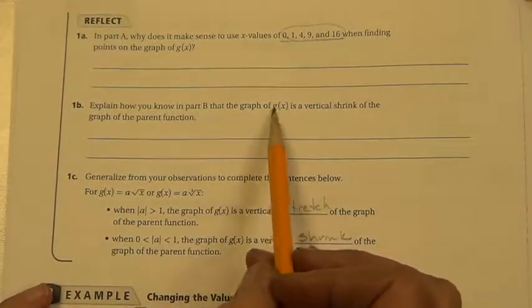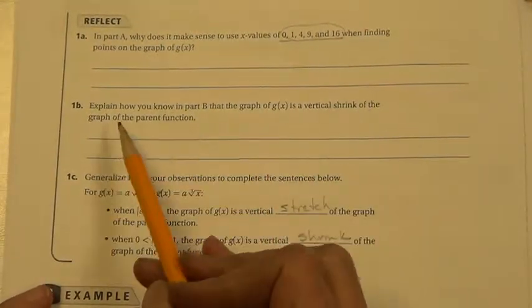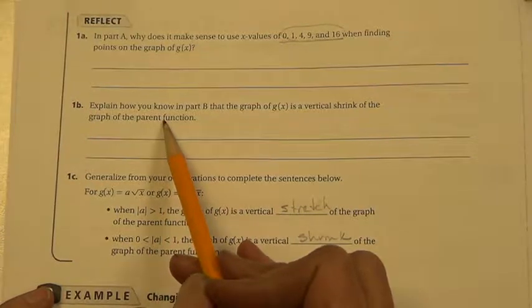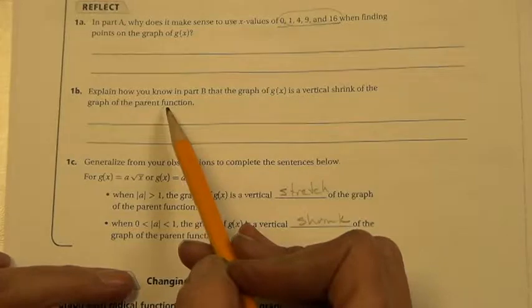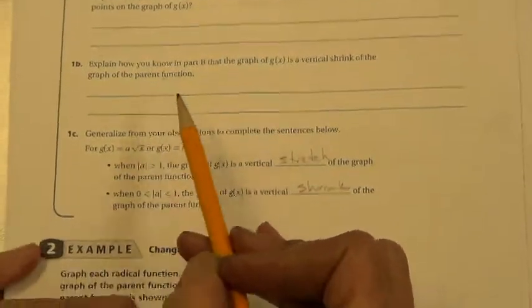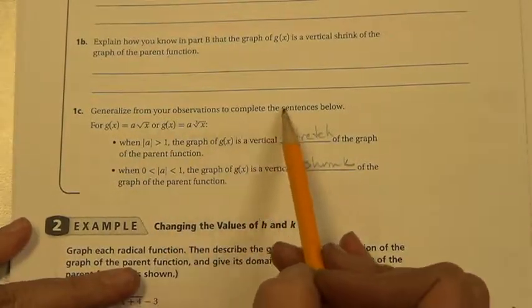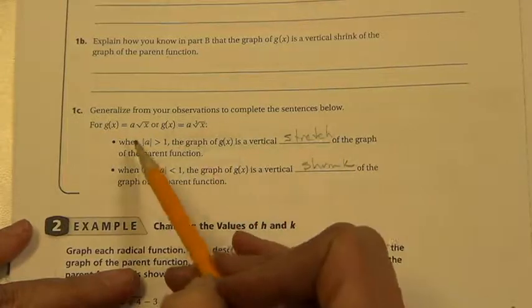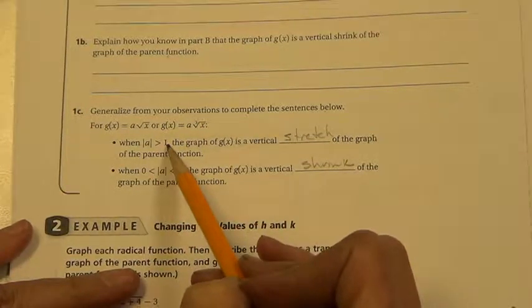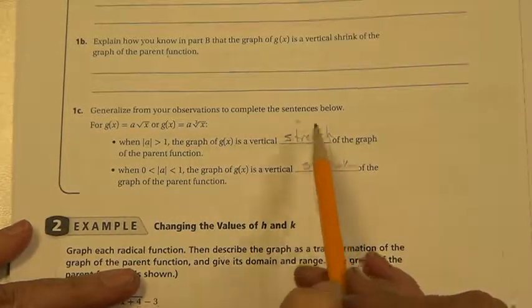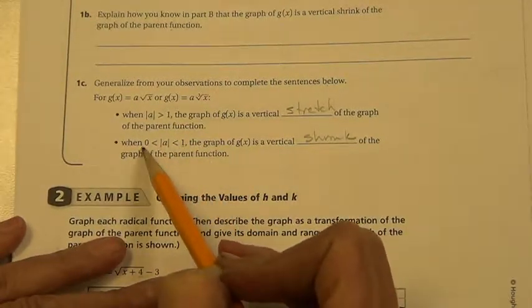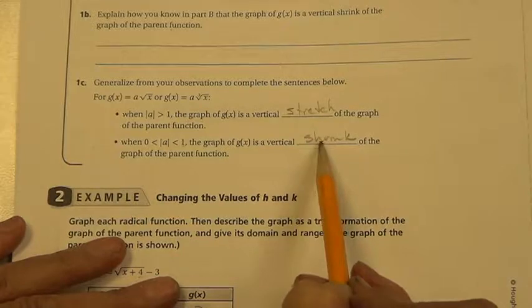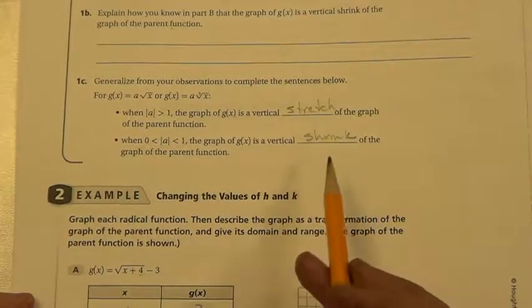Explain how you know in Part B that the graph g of x is a vertical shrink of the graph of the parent function. Go back and listen to the video if you didn't hear me explaining it. Generalize from your observations to complete the sentences below. When the absolute value of a is greater than 1, then it's a stretch. When the absolute value of a is less than 1 or greater than 0, it's a shrink or a compression. Make sure you have both words.